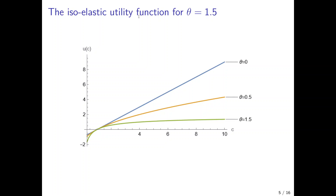This leads to an intuitive explanation for why the elasticity of intertemporal substitution is the inverse of the coefficient of relative risk aversion. An individual that is very risk-averse does not want to depart from consumption smoothing — it does not want a higher level of consumption in some periods in exchange for a lower level in other periods. It prefers the same level of consumption all the time because it does not gain much from higher consumption but can lose a lot from lower consumption. So the elasticity of intertemporal substitution is very low for such an individual.